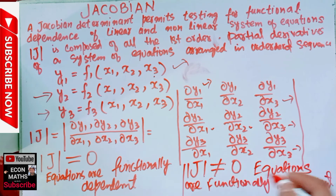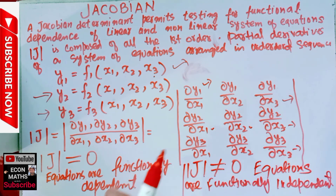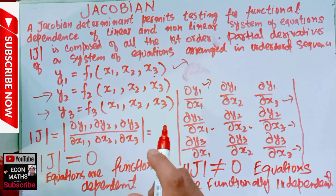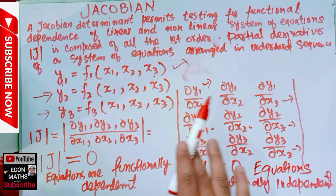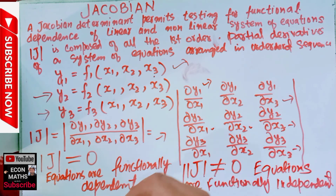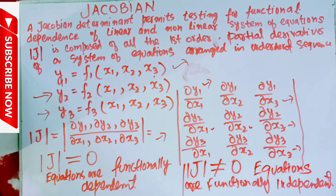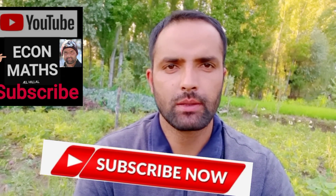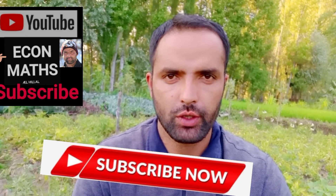Sorry for the background noise — I am not able to control the environmental variables here. This was all about the Jacobian determinant, which is a determinant composed of all the partial derivatives of a system of equations arranged in an ordered sequence. In the next video, we will work through a numerical example. For more videos on mathematical economics, please subscribe to our YouTube channel Econ Maths, and like, comment, and share if you liked this video. Thank you.